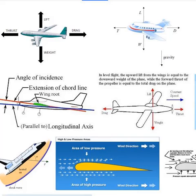If a pilot wants to bank right, he will put the right aileron up and the left aileron down. This will increase the lift on the left wing and decrease it on the right, making the plane bank to the right. Since lift always occurs perpendicular to the surface of the wing, the lift acts at an angle and the plane turns accordingly. Because the lift is not acting directly against gravity, the plane also reduces in altitude.